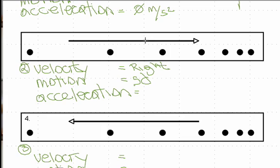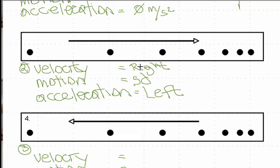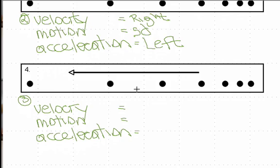Our velocity vector is pointing to the right and we're slowing down. Something must be accelerating the object from the other direction to bring it to a stop. That means the acceleration vector is pointing to the left — opposite to the velocity vector — which confirms we're slowing down.